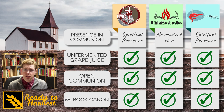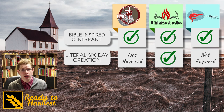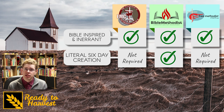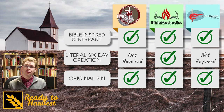All three affirm a 66-book canon of scripture and believe the Bible is inspired and inerrant. The Evangelical Methodist Church doesn't require a position on evolution or the age of the earth. The Bible Methodists teach a literal six-day creation, and young earth creation is commonly taught. Free Methodists allow varying views on the matter.